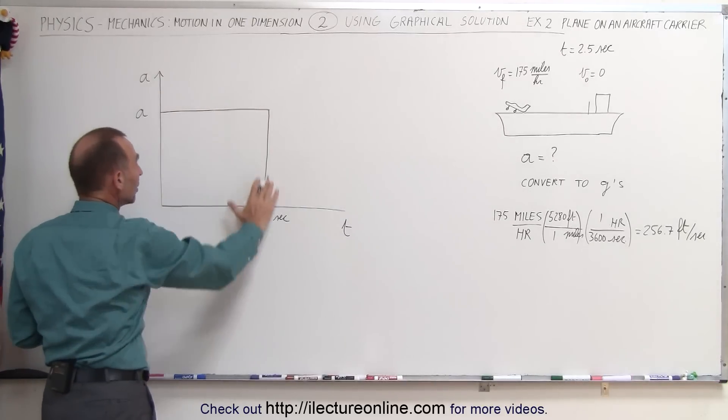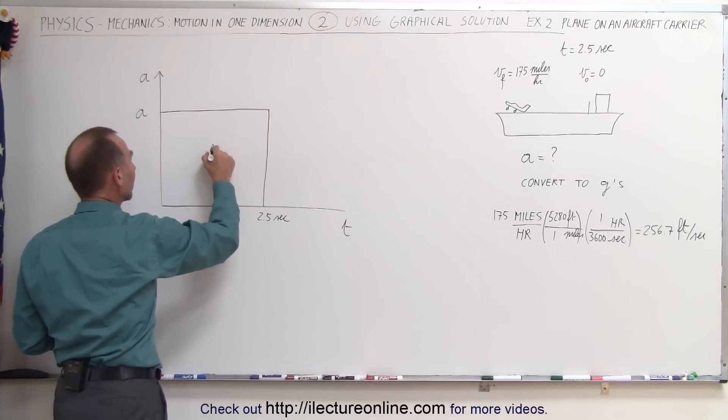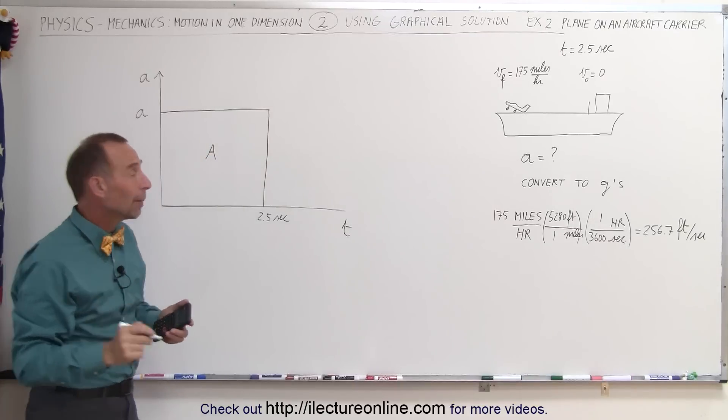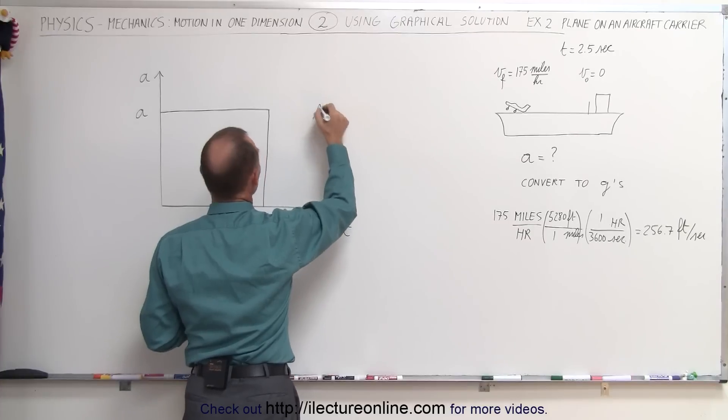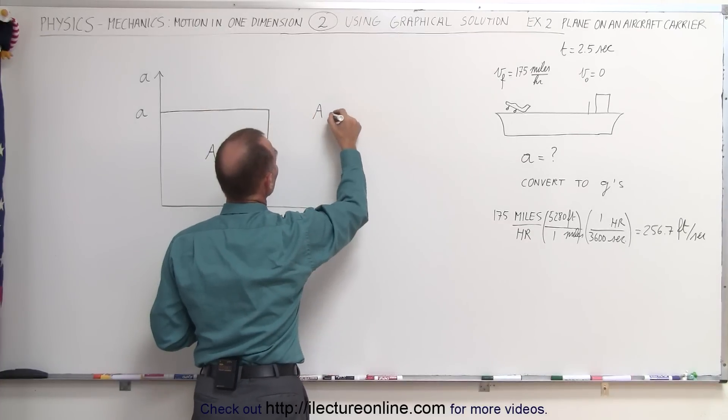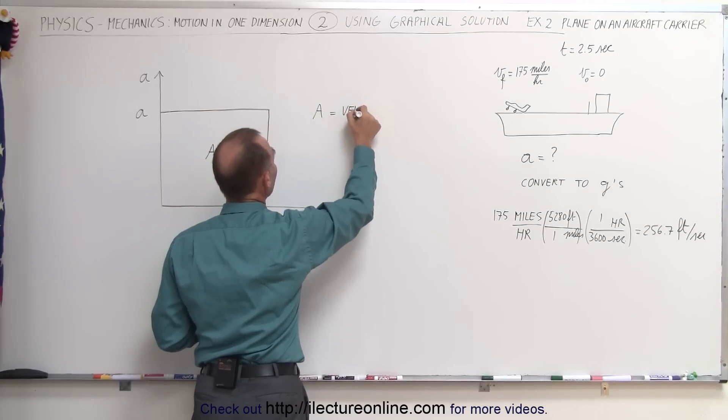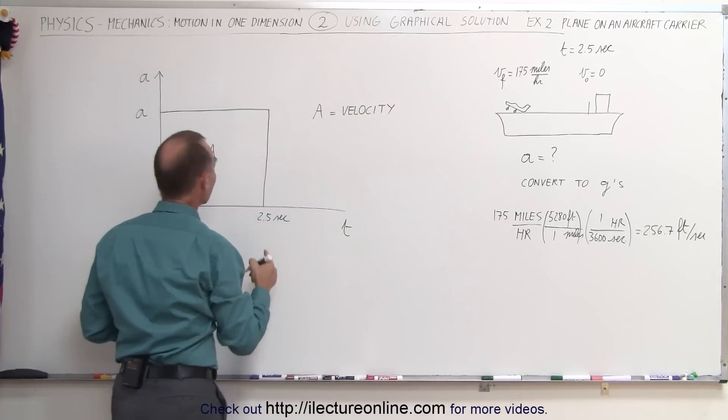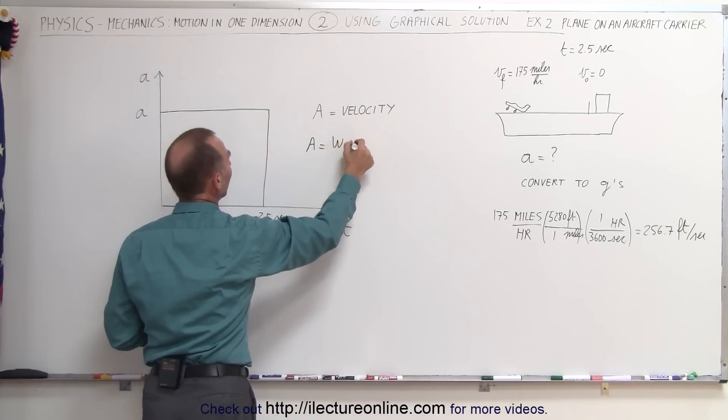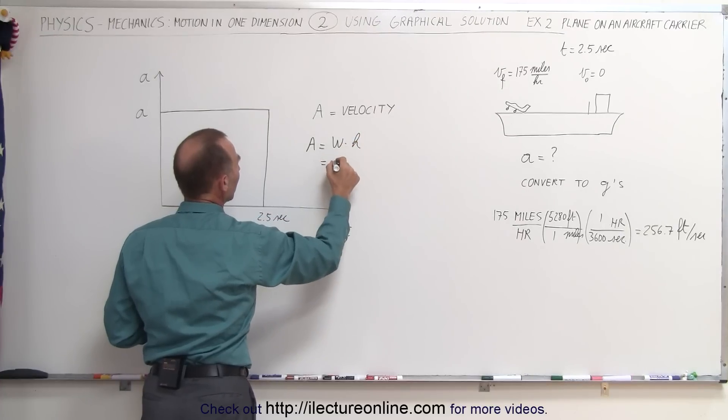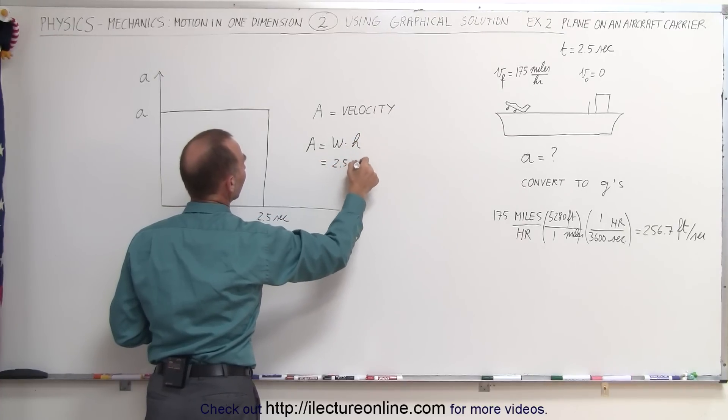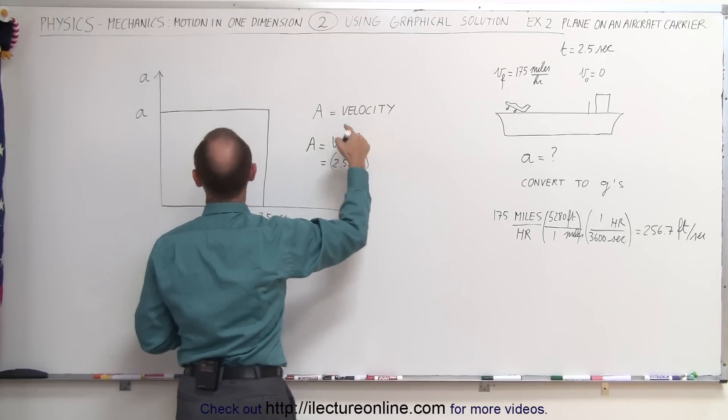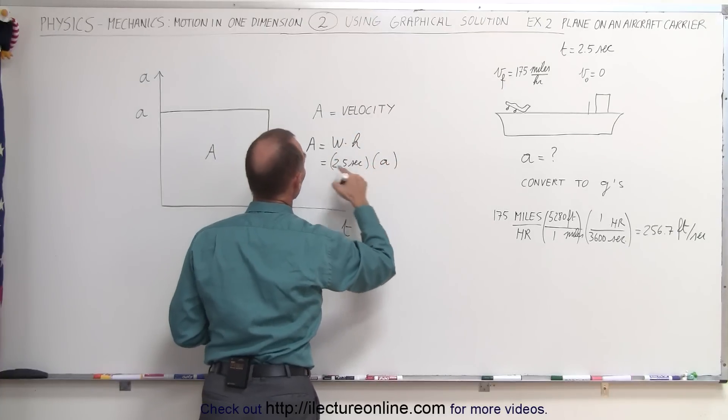Now we have the area underneath this graph. Let's call the area A. And of course the area represents, on an acceleration versus time graph, area is equal to the velocity that it gains during the acceleration. Which means that the area is equal to the width times the height. And the width would be 2.5 seconds.